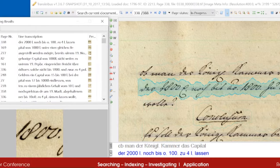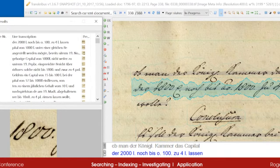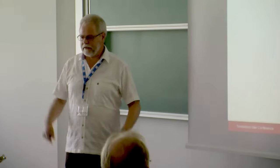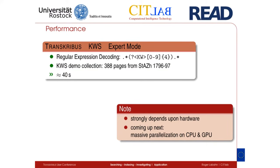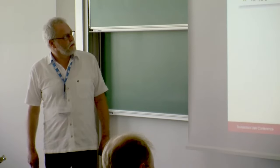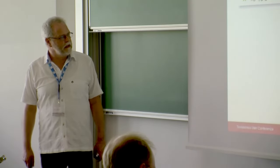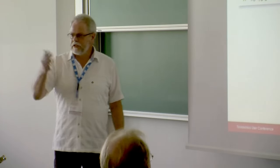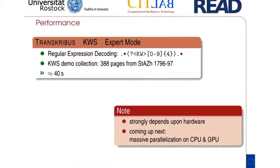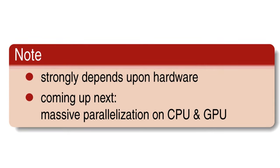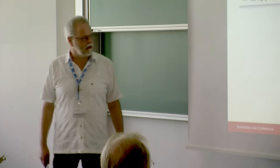These regular expression terms can be very complicated, encoding complete dates and other complex patterns. In Transkribers, this regular expression decoding takes about 40 seconds for 388 pages of the Zürich Staatsarchiv dataset. That may seem long, but massive parallelization on CPU and GPU is ongoing work, and there will be a significant gain in processing time within the next few months.